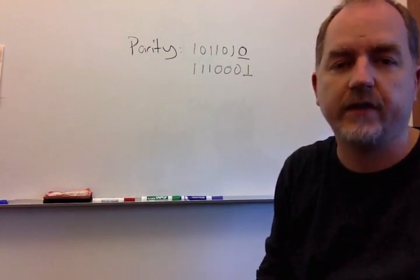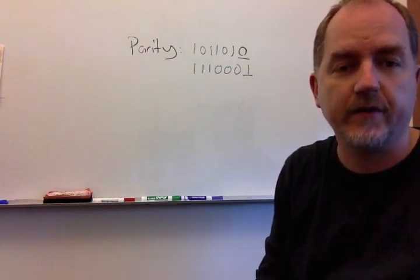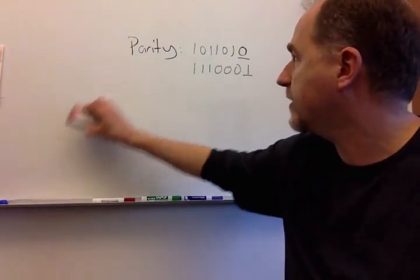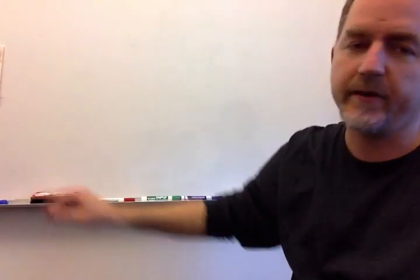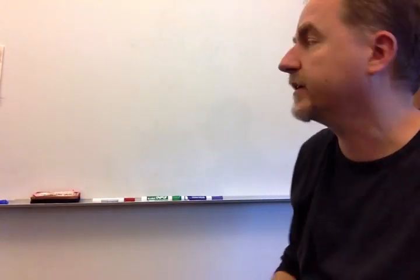Now, Hamming codes use the idea of parity, but use multiple parity bits to protect multiple pieces of data. So let's see how that works. And again, that last one is an example of even parity because we wanted the number to be even. There's also odd parity, and it works the same way.